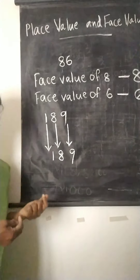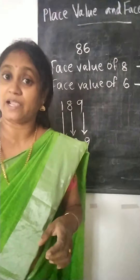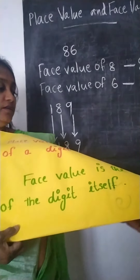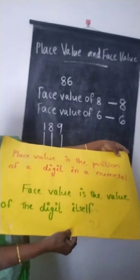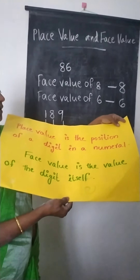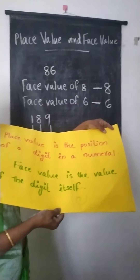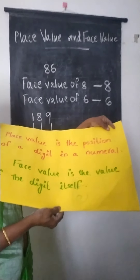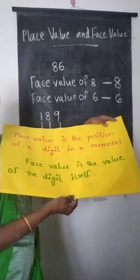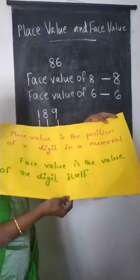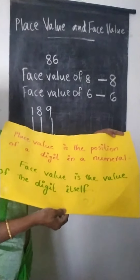So what are the things we studied today? Place value is the position of a digit in a given numeral, and face value is the value of the digit itself.